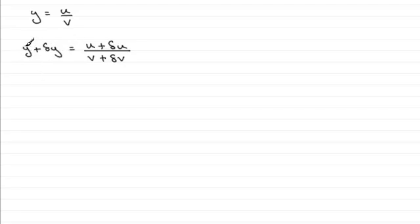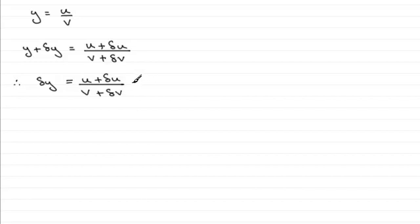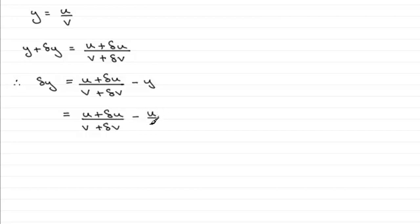Now I'll subtract y from both sides, so we have delta y equals u plus delta u divided by v plus delta v, and then we subtract y. Since y equals u over v, we get the fraction u plus delta u divided by v plus delta v, minus u over v. We can put both of these fractions over a common denominator, which will be v multiplied by v plus delta v.